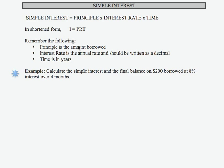P, principal, is the amount borrowed. Interest rate is the annual rate and should be written as a decimal. Time is in years. That's very important.